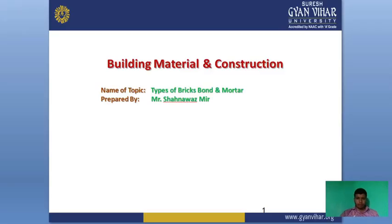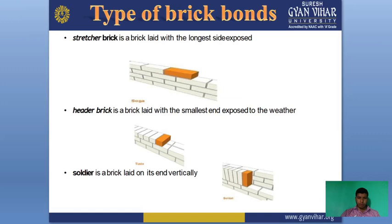Good morning everyone. Today we will discuss our new topic: types of brick and mortar. We will discuss the types of bricks and their bonds. There are different types of brick: the first one is stretcher brick, header brick, and the soldier brick. A stretcher brick is a brick laid with the longest side exposed.